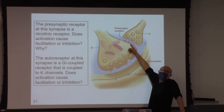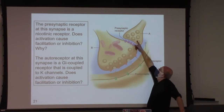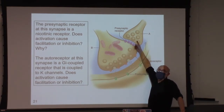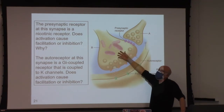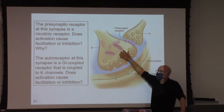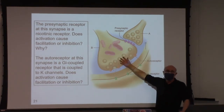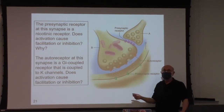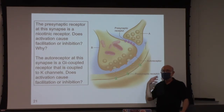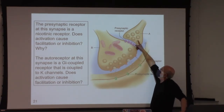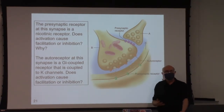If this receptor was a GABA-A receptor and this neurotransmitter was GABA, would that cause facilitation or inhibition of this terminal, of this neurotransmitter release? This is not a question you worked on, but you should be able to process this in real time. GABA-A receptor, GABA — what's the story?